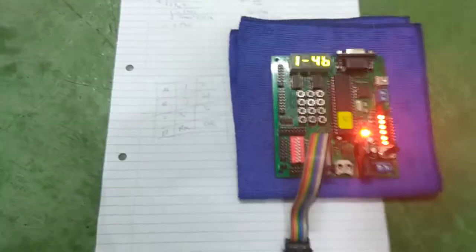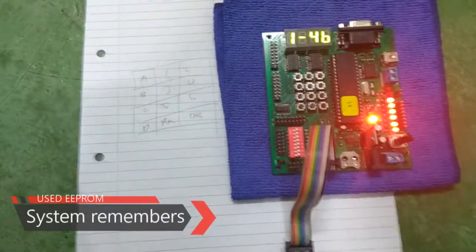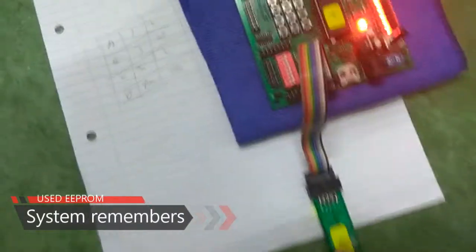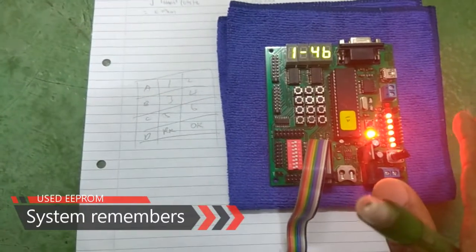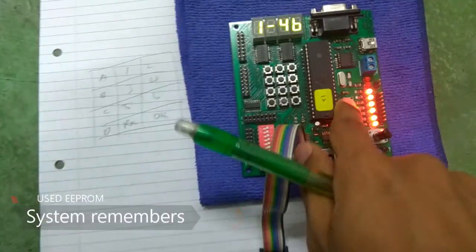One other good thing is this part of the program is written in EEPROM. That means that even if you take out the power, it will still remember how many drinks were left in the system.